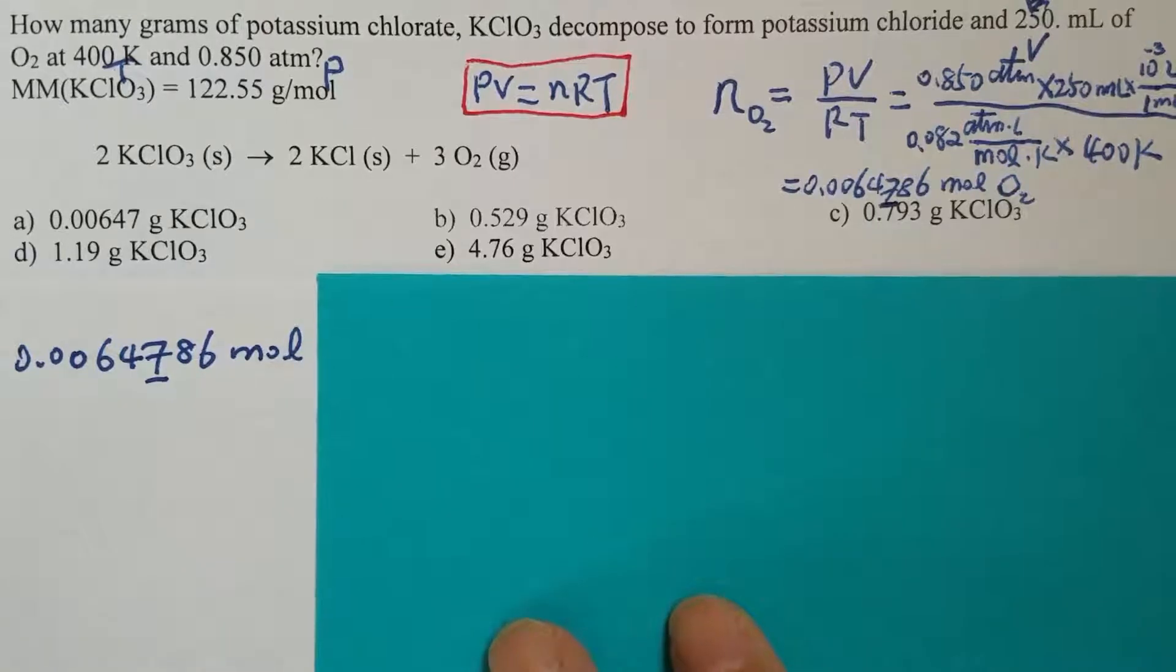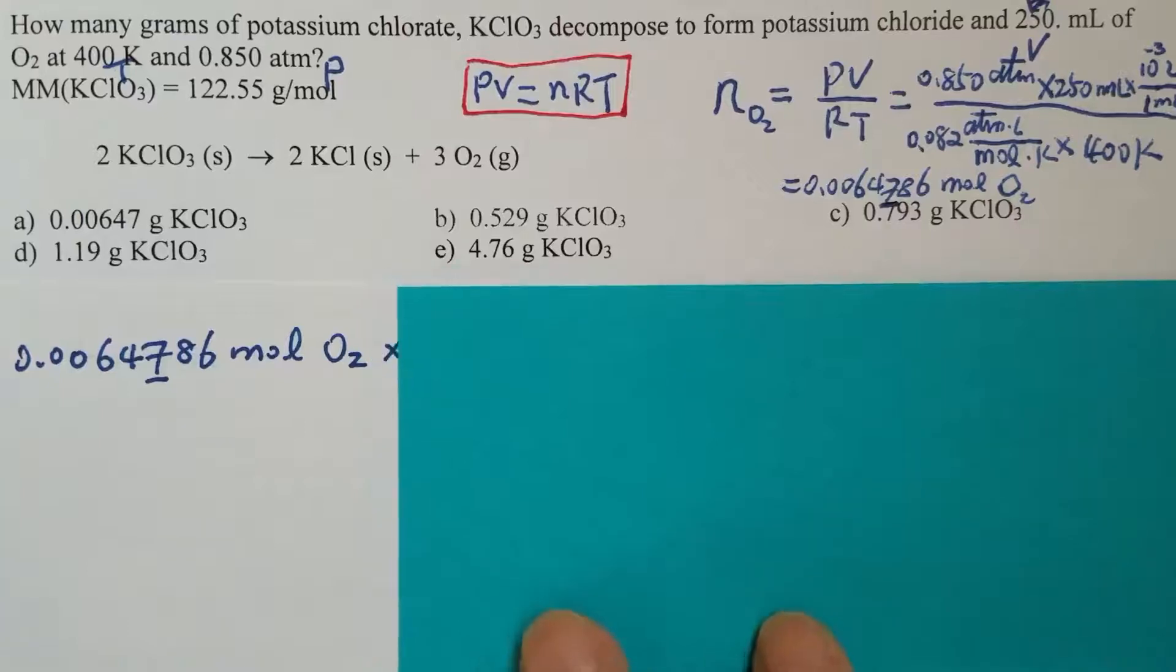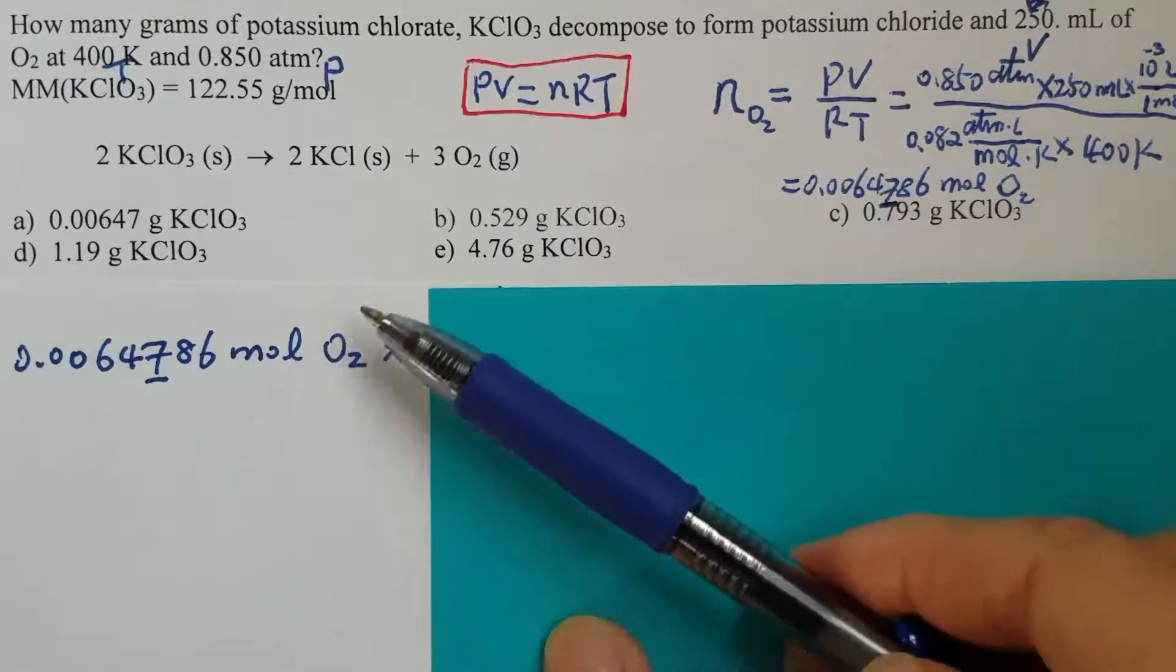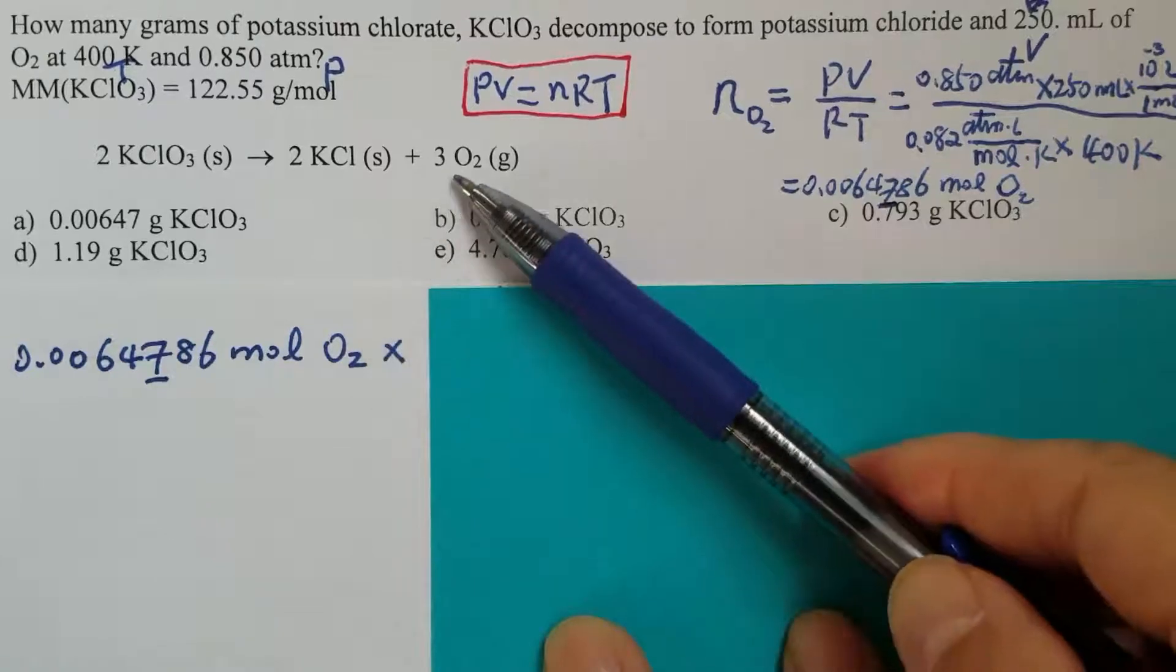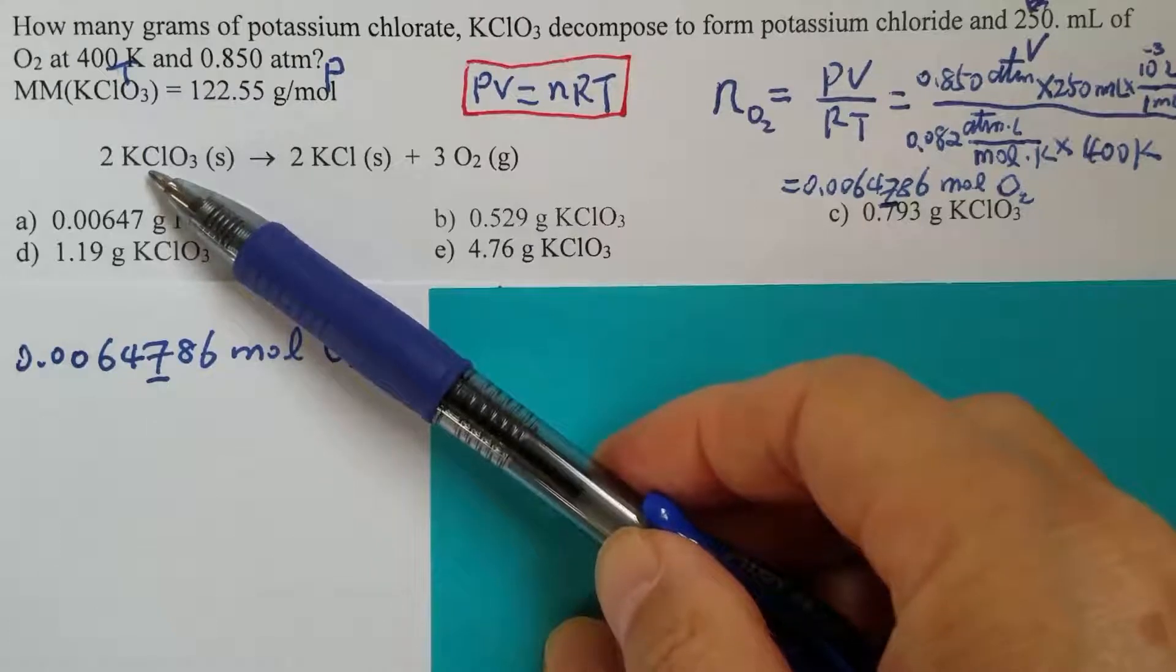We start from the number of moles of oxygen. First step, remember, doing the stoichiometry, convert the number of moles of oxygen to the number of moles of potassium chlorate using the coefficient in the conversion.